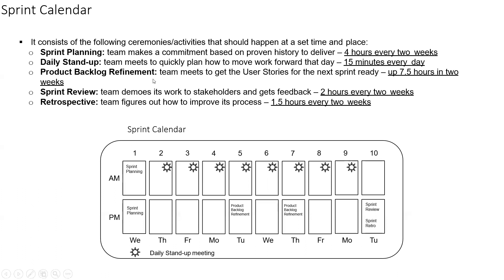Another event that we have learned is product backlog refinement, where the team gathers to make sure that they are ready with the list of user stories to be taken for the next sprint. In the product backlog refinement meeting we are preparing ourselves for the next sprint. It is scheduled by the product owner — it is the responsibility of the product owner to conduct this meeting. It can be planned one day within a sprint or separated across two days based on what the team has agreed. The product backlog refinement meeting should not take more than 7.5 hours in two weeks.